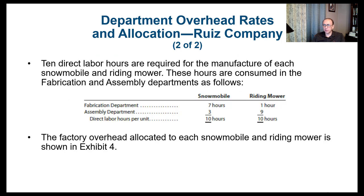Ten direct labor hours are required for each snowmobile and riding mower — the same as in the single method. However, now we see how those 10 hours are split: for the snowmobile, 7 hours are in fabrication and 3 hours are in assembly. The riding mower only requires 1 hour in fabrication and 9 hours in assembly. The total is still 10 hours, but the rates are different, so we expect the overhead allocation between the two products to differ.